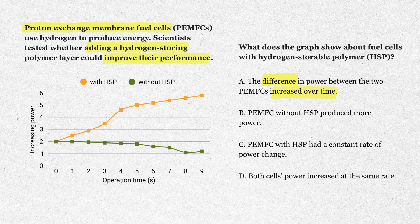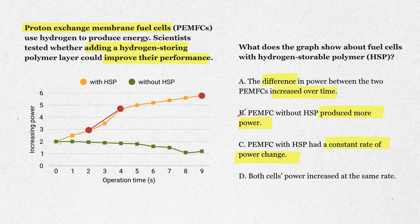Option B: PEMFC without HSP produced more power. Nope — the green line is always below the orange line, so cross that one out. Option C: PEMFC with HSP had a constant rate of power change. Not true — the slope changes. It rises quickly between seconds 2 and 4, then levels off. Cross that one out.